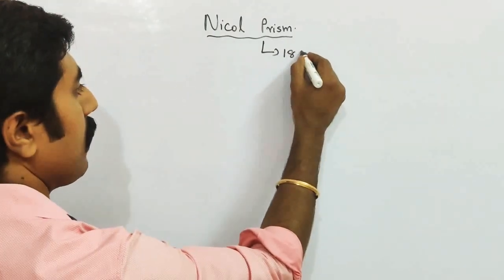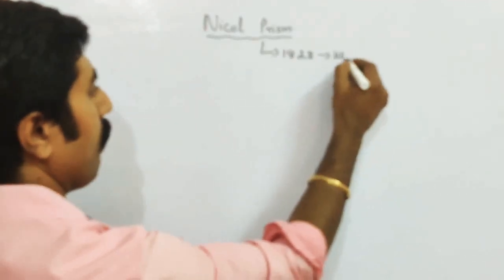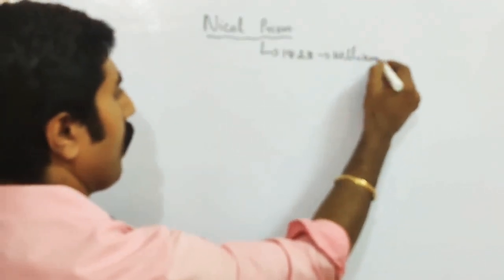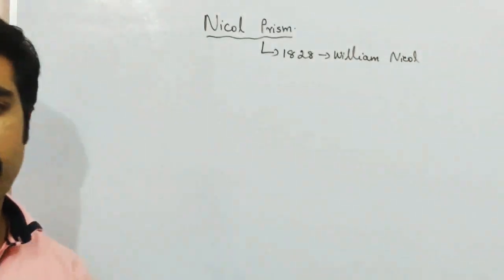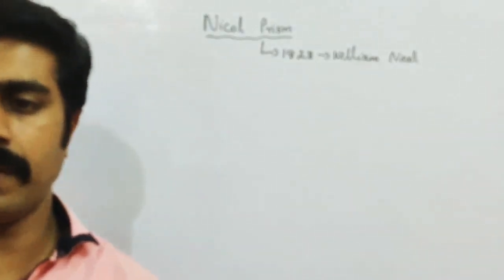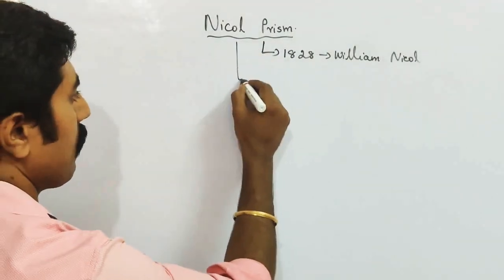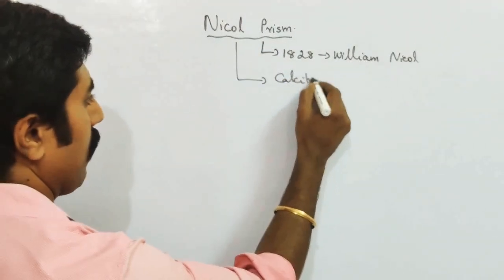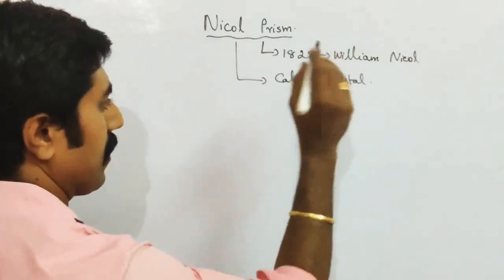In the year 1828, Mr. William Nicol invented the Nicol Prism. What is the Nicol Prism? Actually, the prism which is made up of a calcite crystal. What crystal? Calcite crystal.